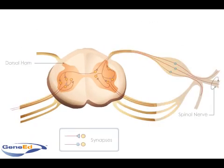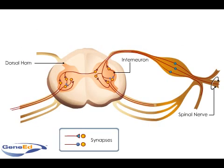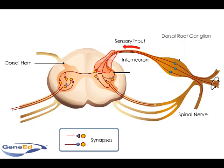Within the dorsal horns, interneuronal cell bodies accept information from sensory neurons to measure pain and temperature. These sensory neuron cell bodies lie in the dorsal root ganglion outside of the spinal cord. They send their axons into the spinal cord via the dorsal roots.